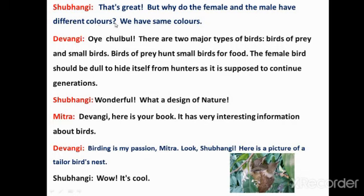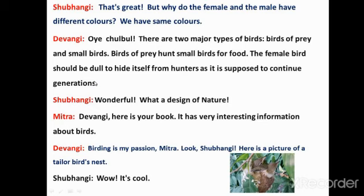Subhangi asks: 'But why do the female and male have different colors? We humans have the same color.' Devangi explains: 'There are two major types of birds — predatory birds and small birds. Predatory birds hunt small birds for food. The female birds should be dull — to hide themselves from hunters — to camouflage from predatory birds.'